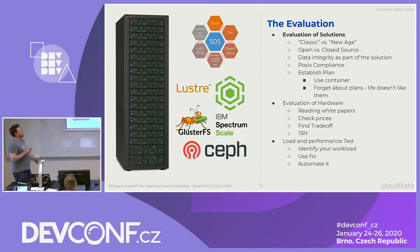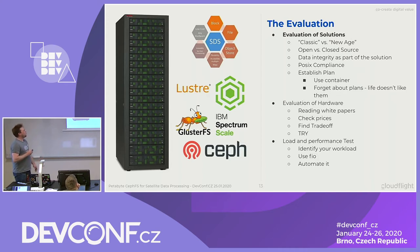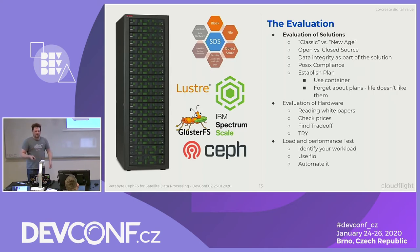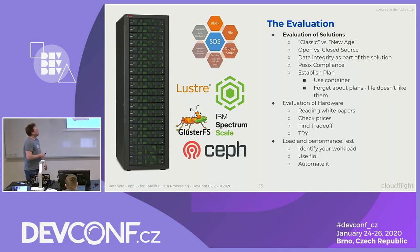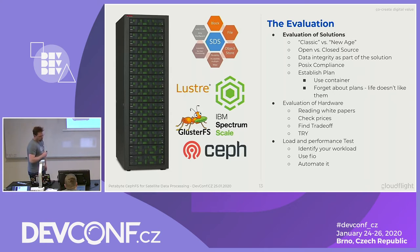From the beginning we said okay, we want something that is at least able to do block and file storage — object store we didn't care so much about — just has to provide access paths in terms of block and file storage. Low cost on any hardware is also fine because we didn't want to get vendor lock-in. We didn't want to get into a situation where at some point we suddenly recognize we can't buy anything else than HP or something like that.